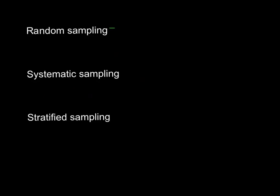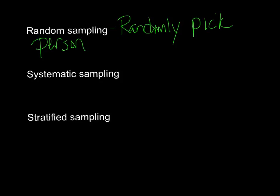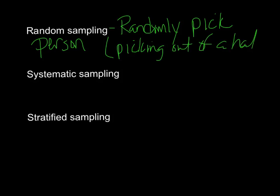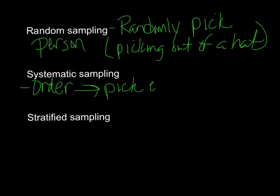Types of sampling. There are certain ways to sample — make sure you know these and write the definitions down. The first is random sampling: you're just going to randomly pick people, there's no order to it — like picking names out of a hat. The second is systematic sampling: there's order to your sampling. For example, pick every fifth person. You stand at the doors and every fifth person that comes in, you pull aside and ask them a question.